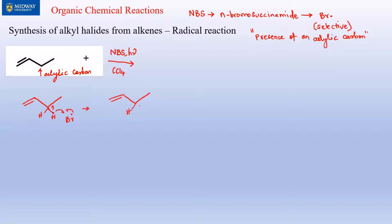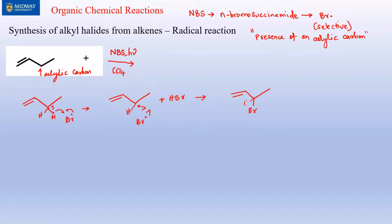That hydrogen combines with the Br• to produce HBr. Now the carbon has an odd electron — a radical. Another Br• can directly attach itself to that odd electron, and this gives one of the products.